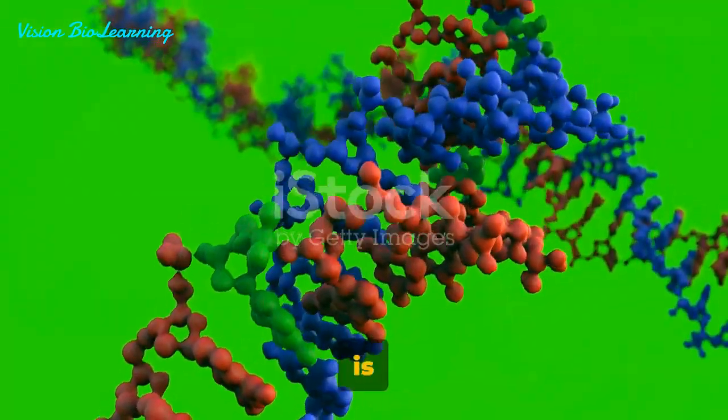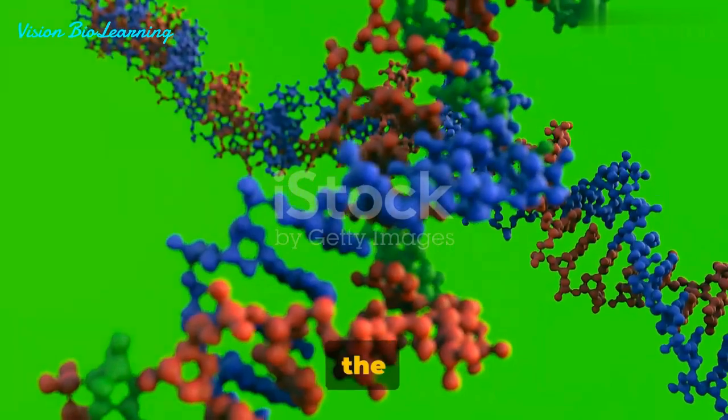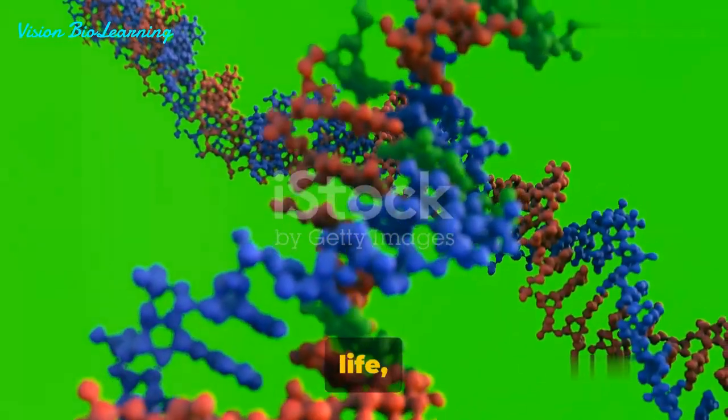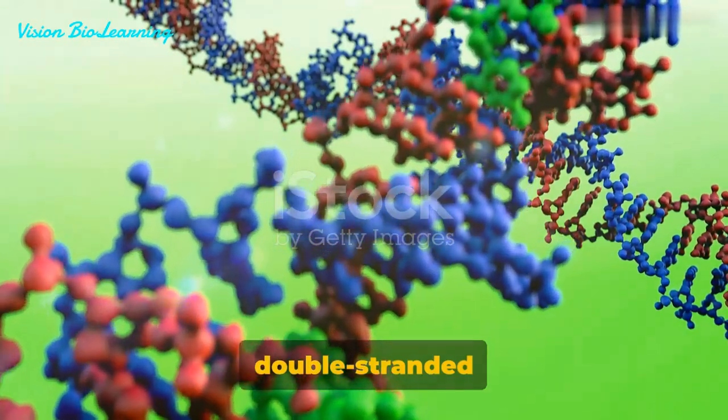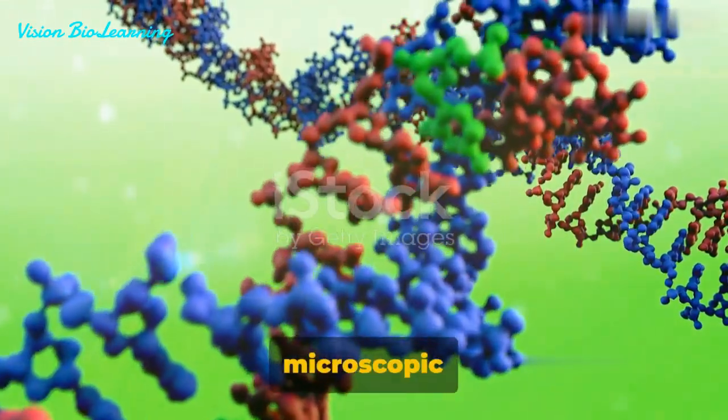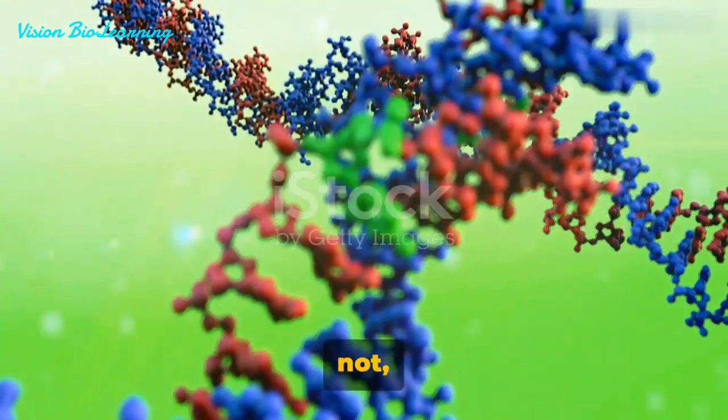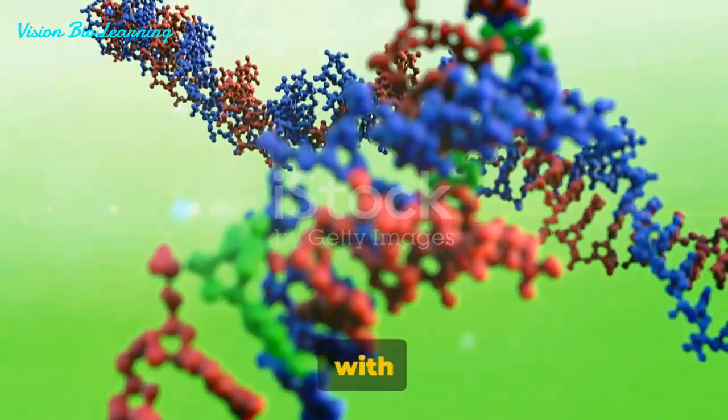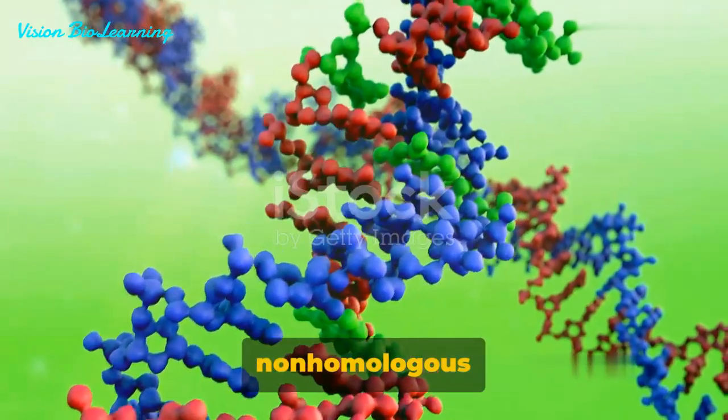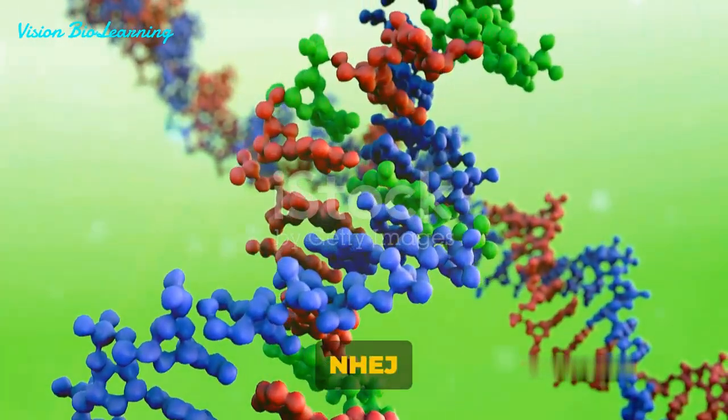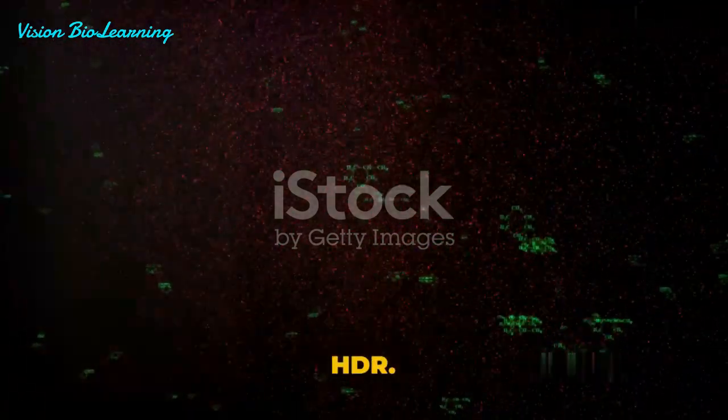The nucleus of our cells is a world of its own, where the DNA, the blueprint of life, is constantly under attack, leading to breaks in its double-stranded structure. It's a microscopic battlefield, but fear not, our cells are equipped with two primary strategies to mend these breaks: non-homologous end-joining, or NHEJ for short, and homology-directed repair, known as HDR.